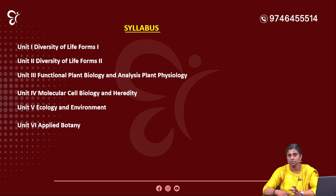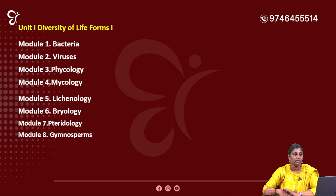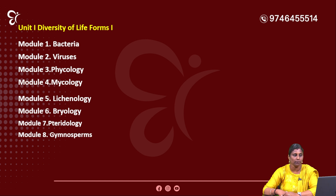There is a mark distribution across the units — 4 marks per unit. We will begin with the first unit. Unit 1 is Diversity of Life Forms 1. We will study this first unit with its modules. Module 1: Bacteria.